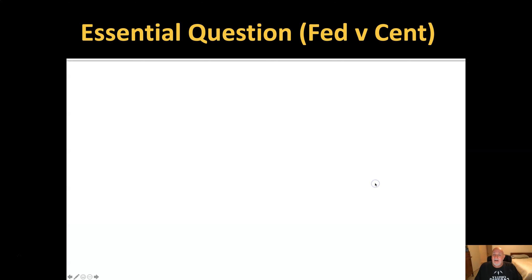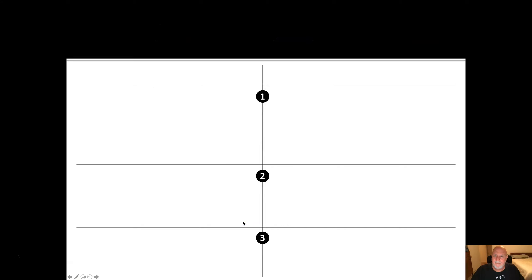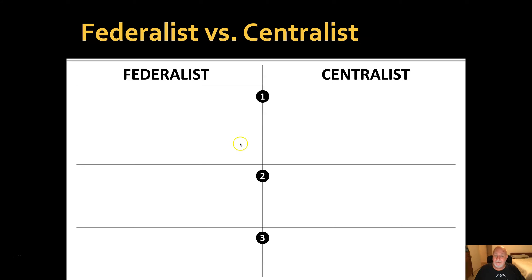Our essential question today is: what was the difference between the Centralist and Federalist parties in Mexico? Your C-notes today are set up as an organizer with two columns, and we're going to write the differences between the two political parties — the Federalists and the Centralists.